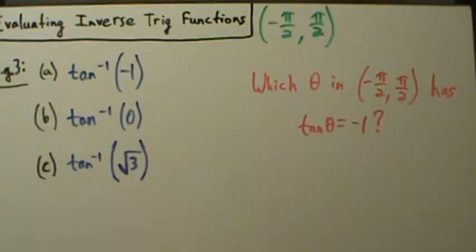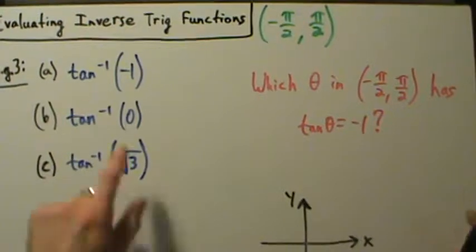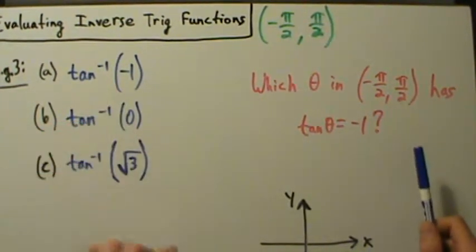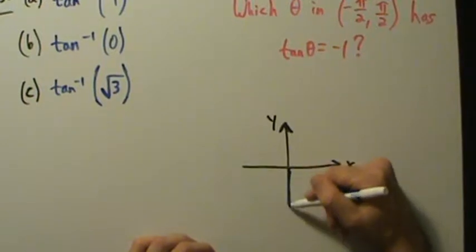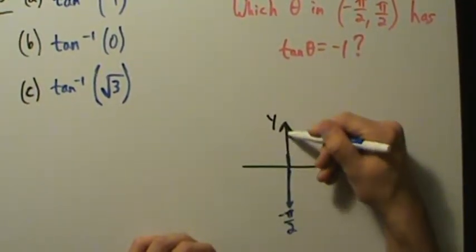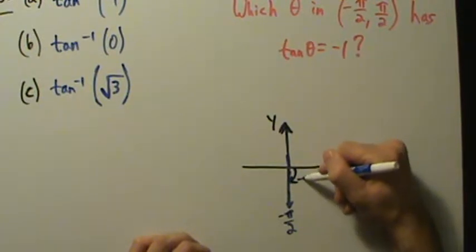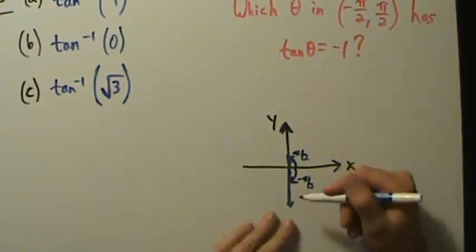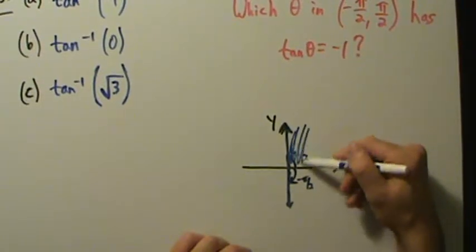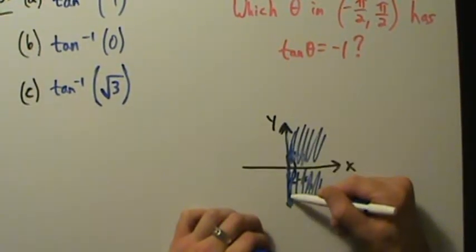It might help to draw a little graph of what's going on, especially with the negatives because it can be confusing. Here's an x-axis and a y-axis. When we evaluate part A — inverse tangent of negative 1 — our answer has to be between negative pi over 2 and positive pi over 2. Negative pi over 2 is down here and positive pi over 2 is up here. So whatever answer we get, it has to be somewhere in this interval.